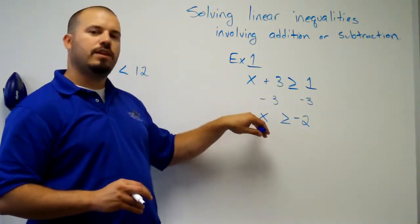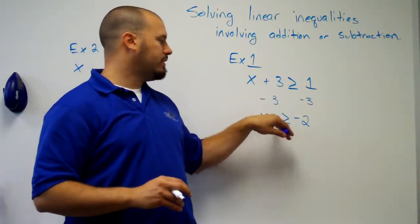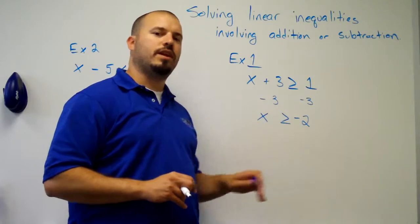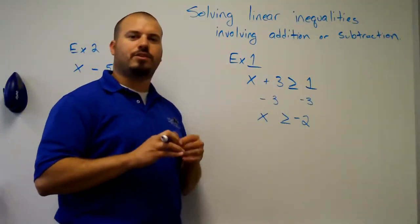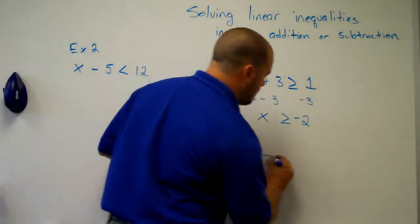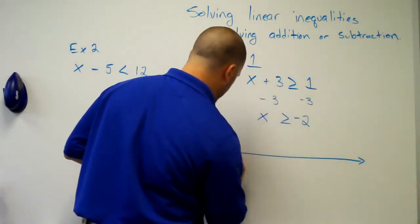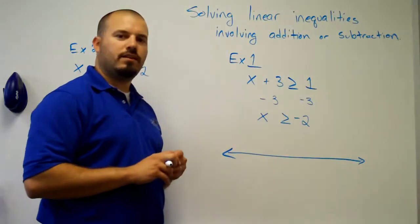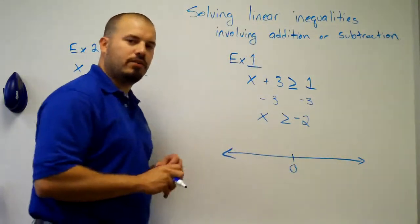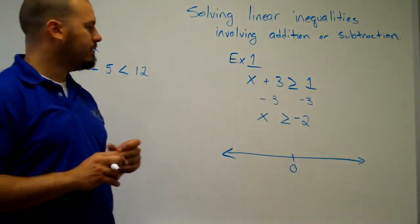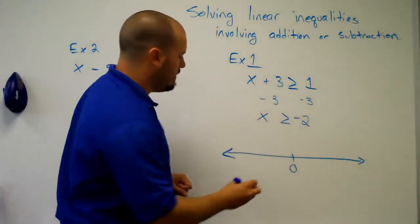So, our solution is all the values for x that are greater than or equal to negative 2. Oftentimes, you'll be asked to graph these solutions. And the way you would do that, we use a number line. I typically mark 0, so we have some sort of a reference, and negative 2.